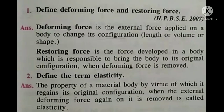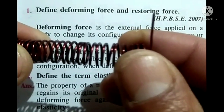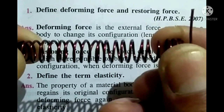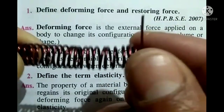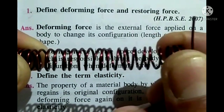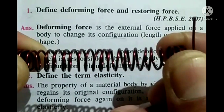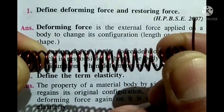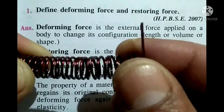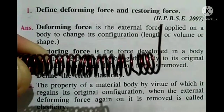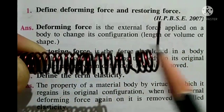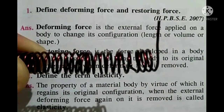When the deforming force is removed, the restoring force acts on the body. For example, when we stretch the spring by applying a deforming force and then release it, the spring comes back to its original position — it restores. The applied force acts along both positive and negative axes, and the opposing force that brings it back to its original position is called the restoring force.